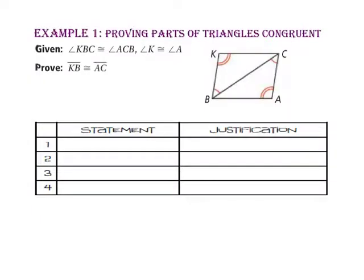In example 1, we will prove parts of triangles congruent. Let's start with the given information that angle KBC is congruent to angle ACB and that angle K is congruent to angle A.